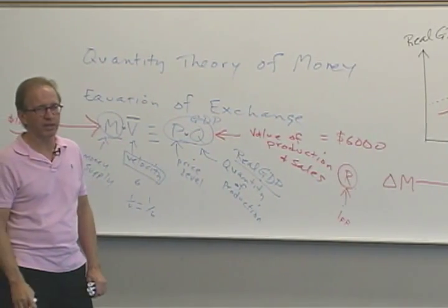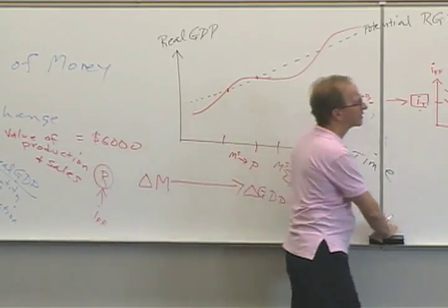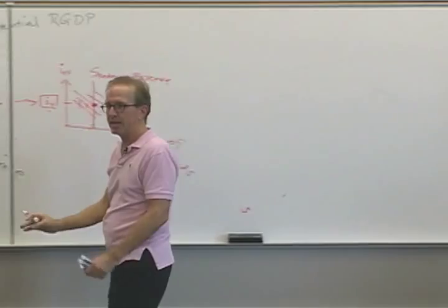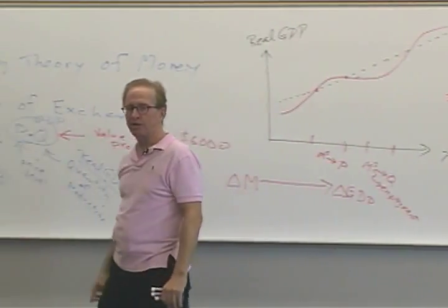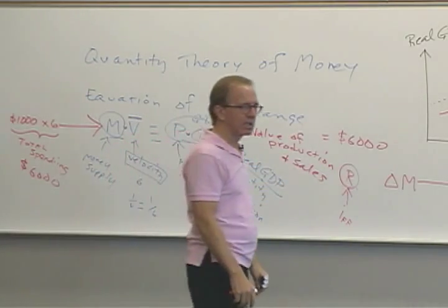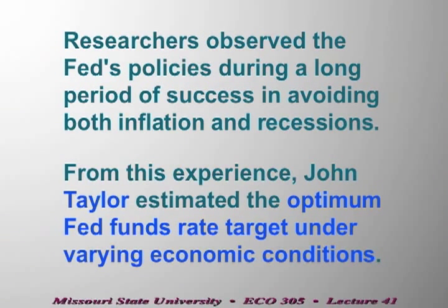The Federal Reserve went for about 20 years — from roughly 1982 to 2001 — with great success at managing the economy and avoiding the two ditches, with just one recession in between and moderate inflation. Economist John Taylor at Stanford studied what the Fed did during this period and came up with something called Taylor's Rule, first written about around 1992.